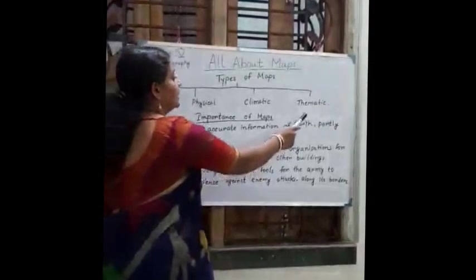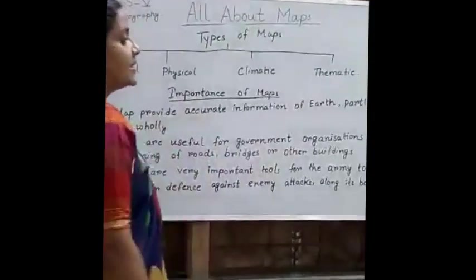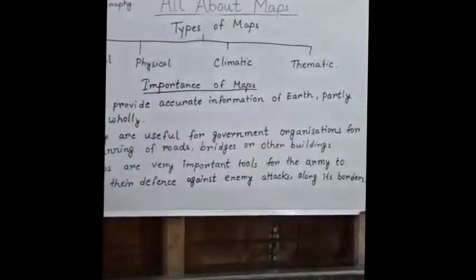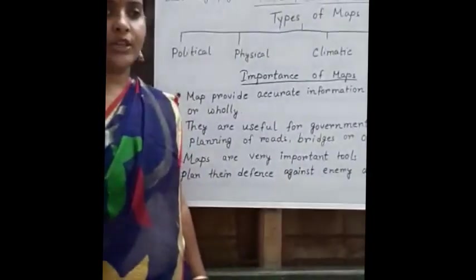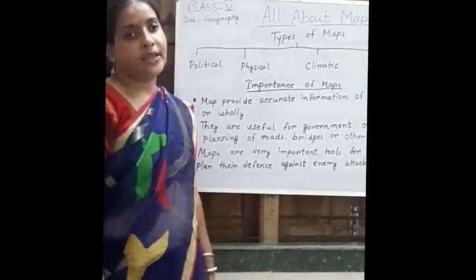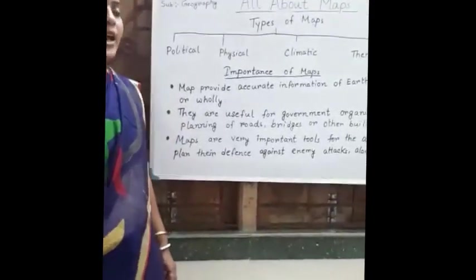Next is thematic map. This type of map is based on a particular theme, for example, vegetation, population, forest cover, etc.